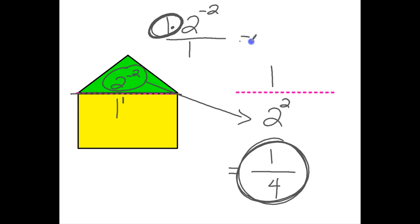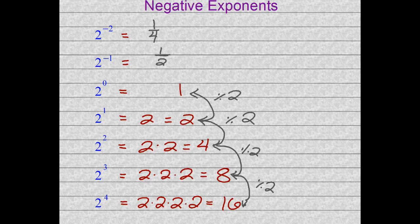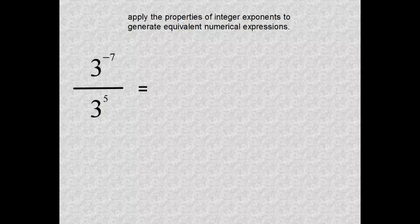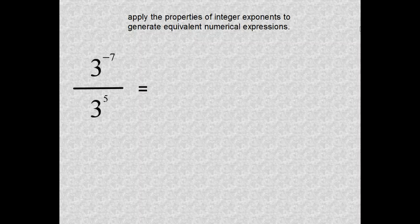Well, let's see if that makes sense. On our chart, what was 2 to the negative 2nd? Let's go back a couple pages. 2 to the negative 2nd, as we just stated, is equal to 1 fourth.